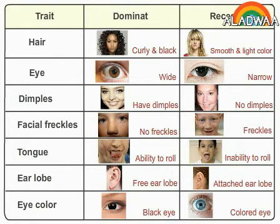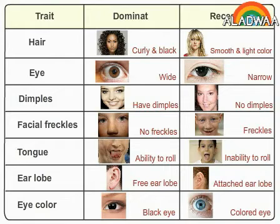Trait: Hair — dominant: curly and black; recessive: smooth and light color. Trait: Eye — dominant: wide; recessive: narrow.